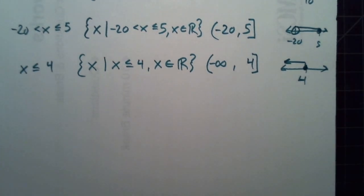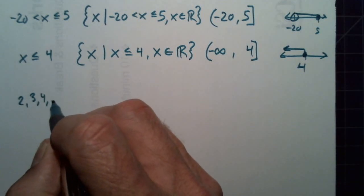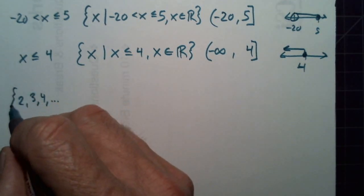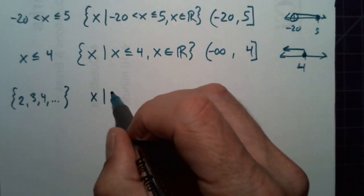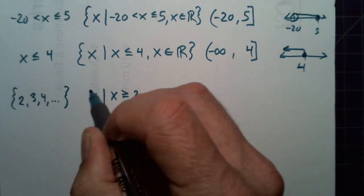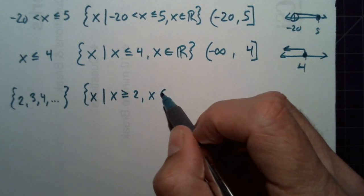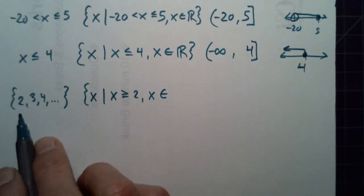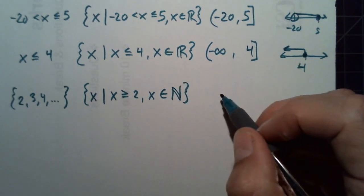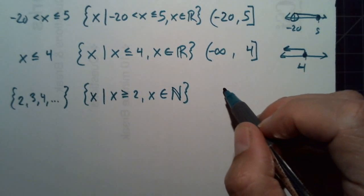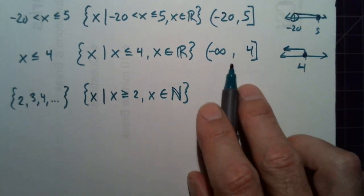All of those had all real numbers. Now when we look at sets that don't include all real numbers, in set builder notation we'll say x such that x is greater than or equal to 2, starting at 2 and going to infinity. But now we have to say what set x is in — we could say natural numbers. We can't write this set in interval notation because it's not all real numbers.